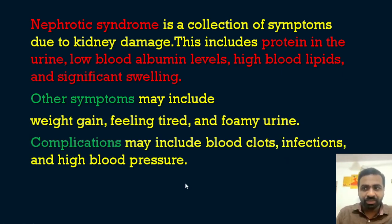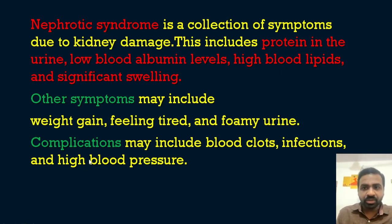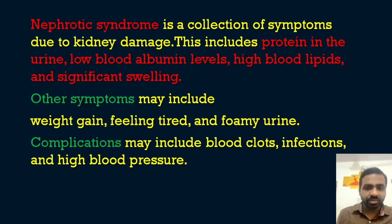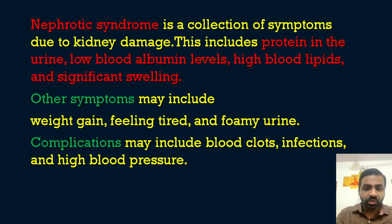Complications of nephrotic syndrome include blood clots, infections (pyuria), and high blood pressure. Hematuria can be seen as a complication rather than an initial sign. The question asked about the characteristic presenting symptoms, so don't confuse these with the complications.